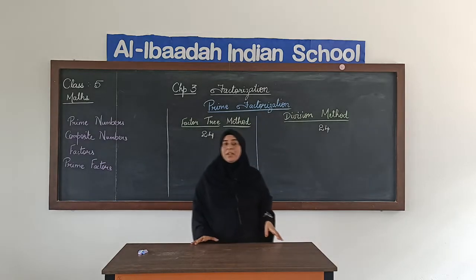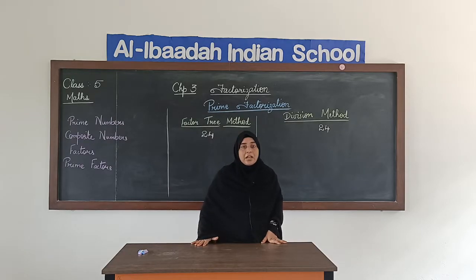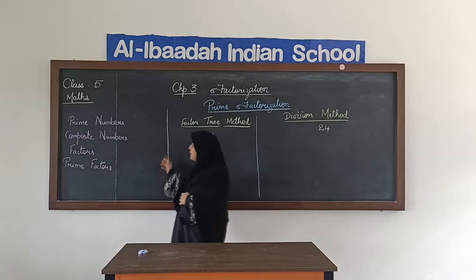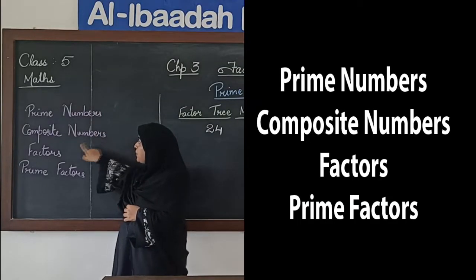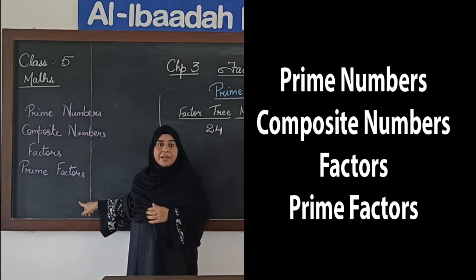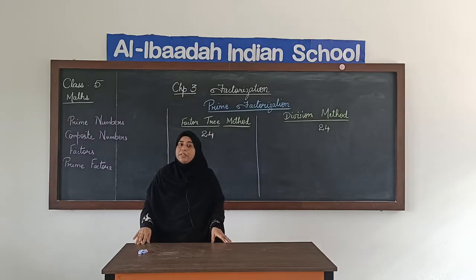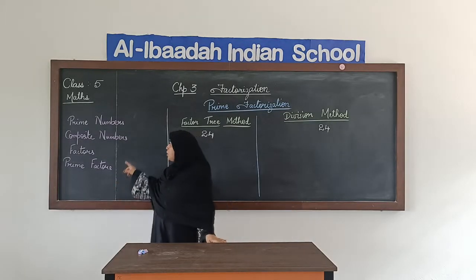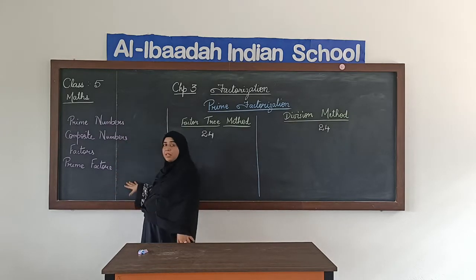Now before we start this topic, we have to recall a few terms that you have already learnt in class 4. Those things are prime numbers, composite numbers, factors, and prime factors. These things you have already learnt in class 4 — let us just recall and see what these terms mean.